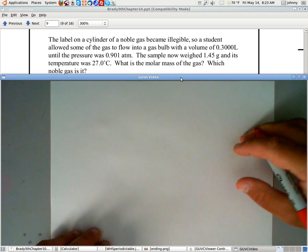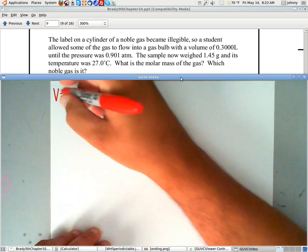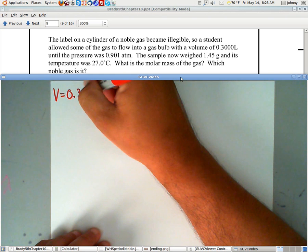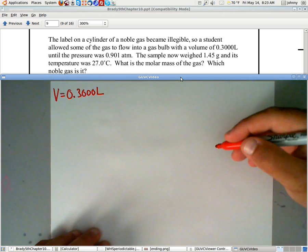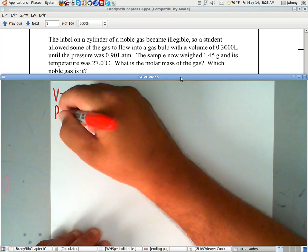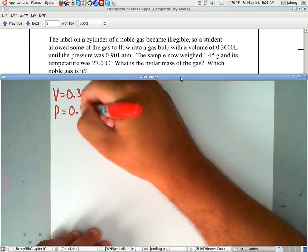A student allowed some of the gas to flow into a gas bulb with volume. They tell us it has a volume of 0.3000 liters. As we keep reading it, it says until the pressure equals 0.901 atmosphere.